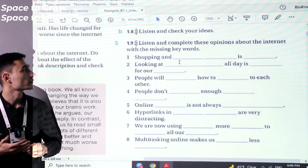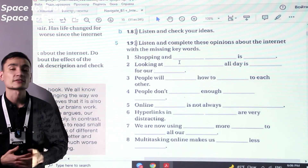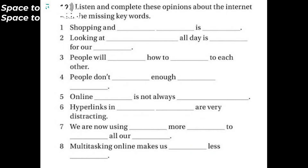Exercise 5. Listen and complete the opinions about the internet with the missing keywords. Audio 1.9: One — Shopping and banking online is unsafe. Two — Looking at screens all day is bad for our eyes. Three — People will forget how to talk to each other. Four — People don't spend enough time outside. Five — Online information is not always reliable. Six — Hyperlinks in online texts are very distracting. Seven — We are now using far more electricity to power all our screens. Eight — Multitasking online makes us work less effectively.